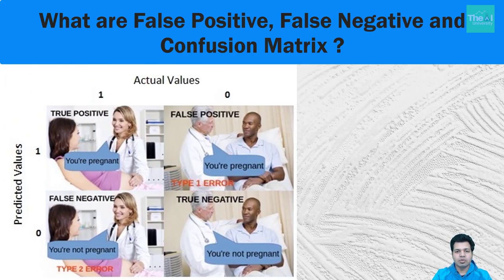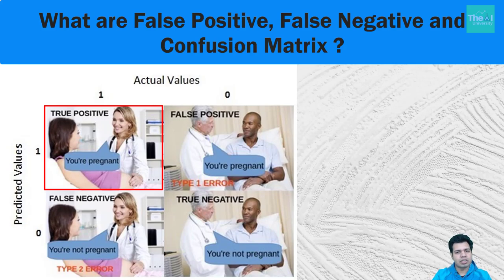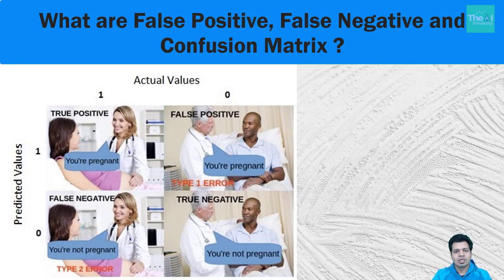Please note that actual values shown as 1 and 0 can be referred to as true and false respectively. The predicted values shown as 1 and 0 can be referred to as positive and negative respectively. Looking at the true positive quadrant: there is a woman and a doctor who just gave her the news that she is pregnant. Since women can be pregnant and she actually is, this case is referred to as true positive — when the test says you have it and you actually have it.